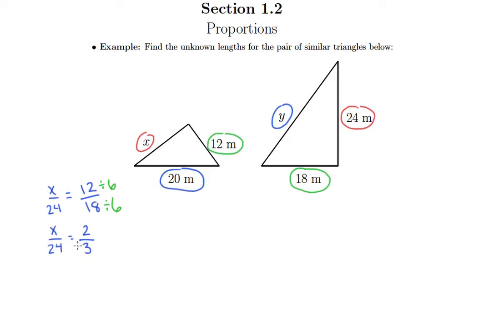So now we can do our cross product, and so this is 3x equals 24 times 2 which is 48. And then finally we can divide both sides by 3 to get the x all by itself. 3 goes into 4 one time, and 3 goes into 18 six times. So we now know that x is 16 meters.